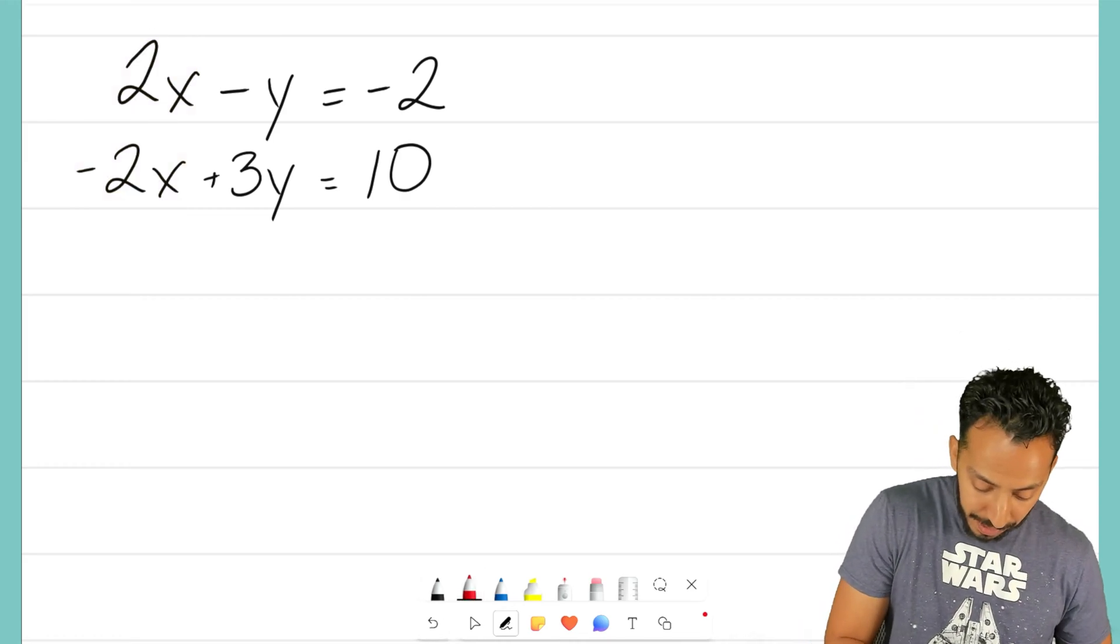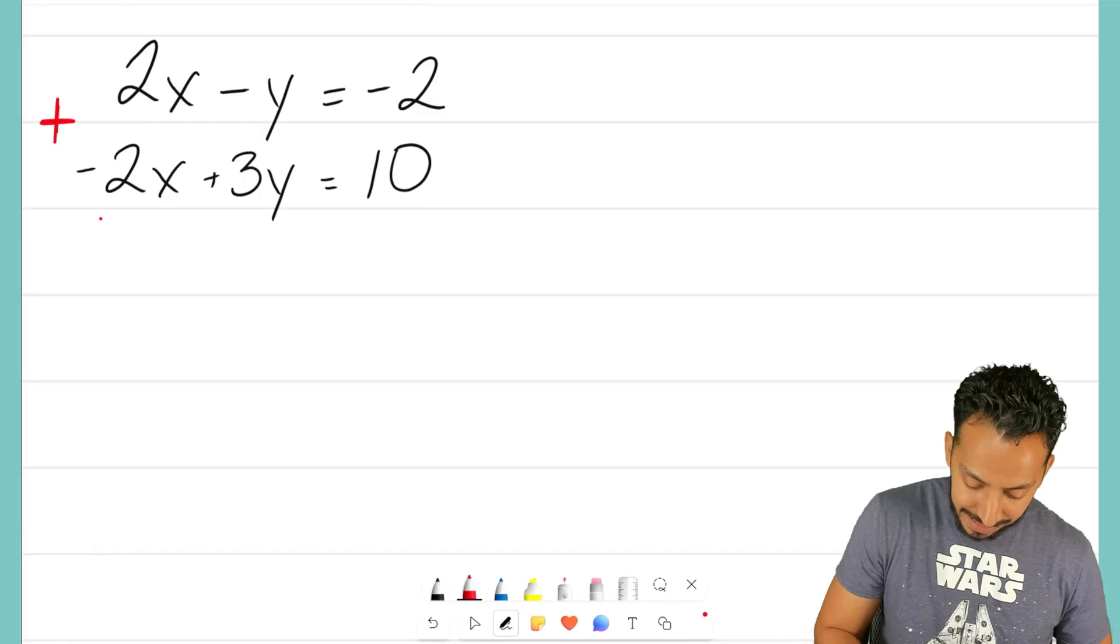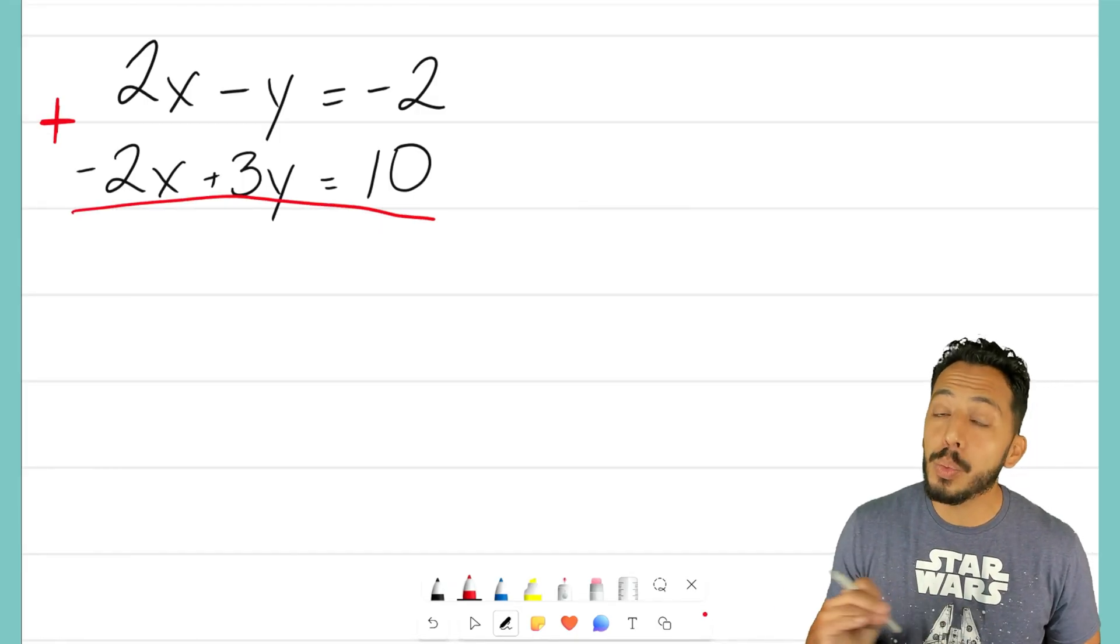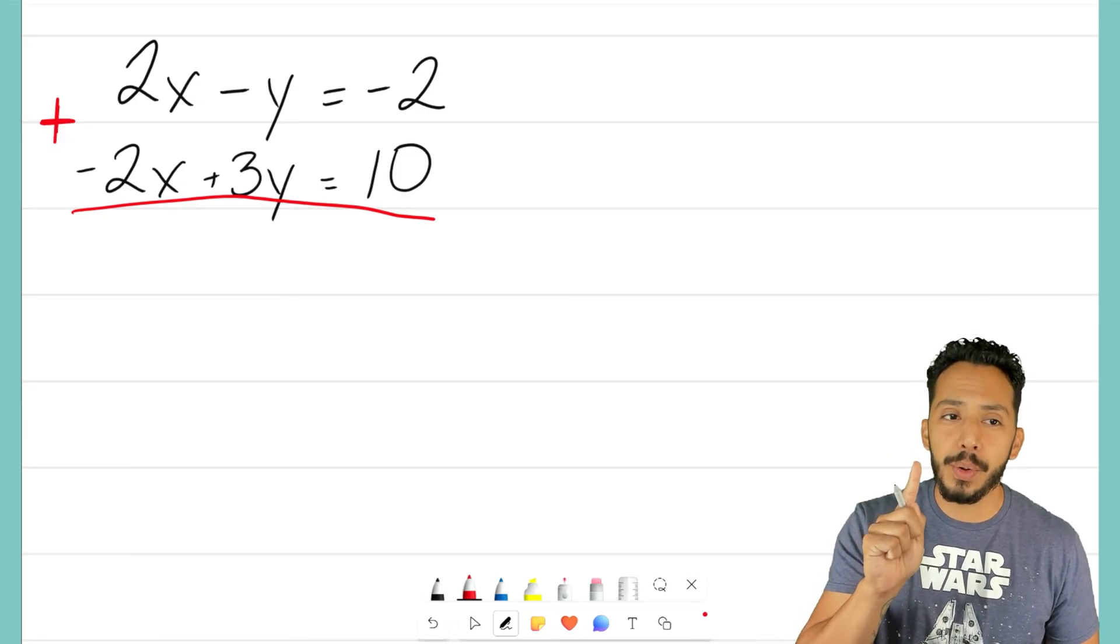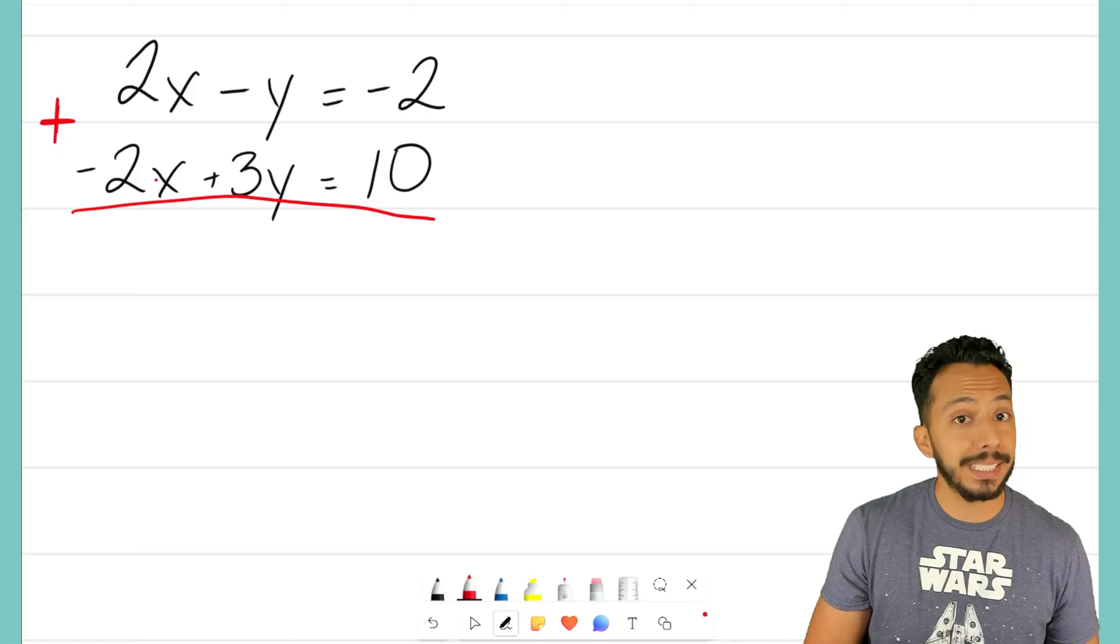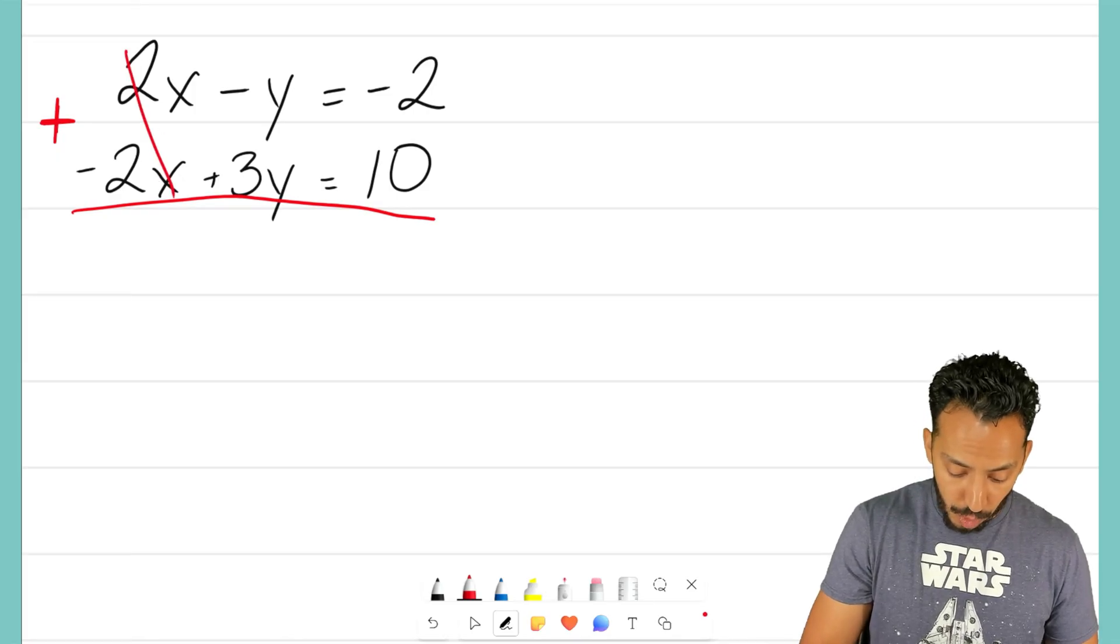So, let's do that. I'm going to put a big plus sign on the left-hand side, a big equal bar, and we are going to combine these two equations to make one equation. Now, 2x plus negative 2x, those are going to zero out.